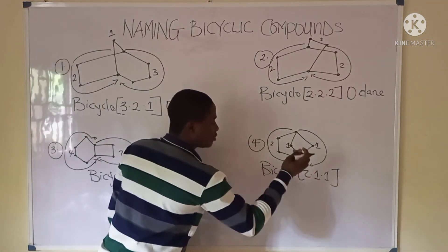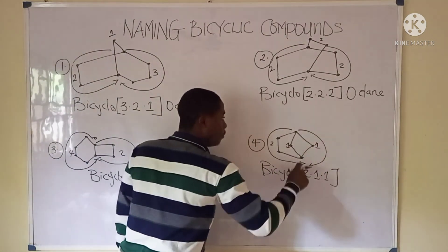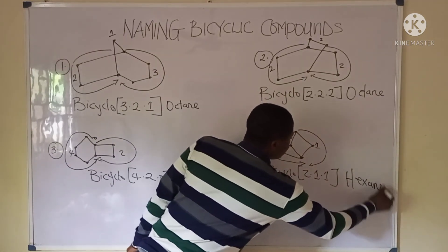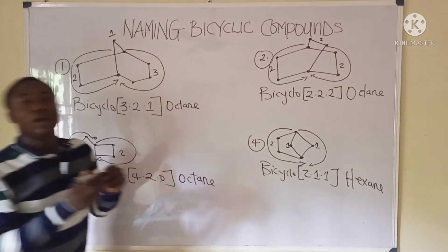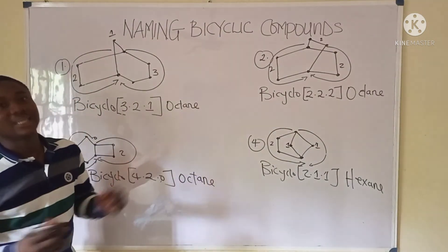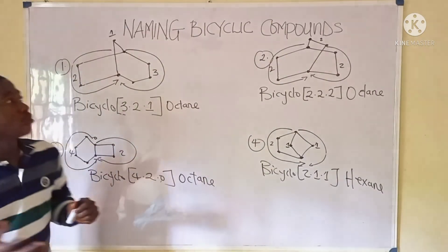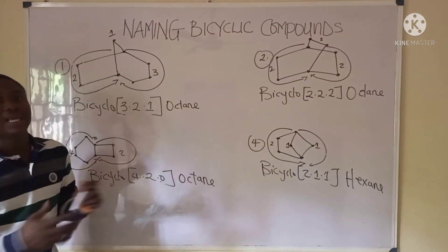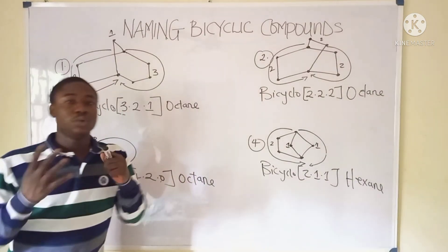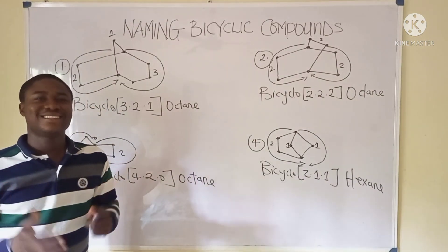In descending order: two, one, one. Counting all carbons: two plus one plus one equals four, plus the two bridgehead carbons makes six, so it is called bicyclo[2.1.1]hexane. Don't forget to subscribe to Chemistry Made Easy with Bright Edu for more videos. Thanks for watching!